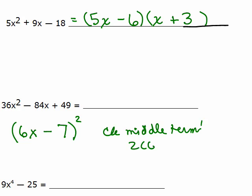Remember, it's 2 times 6x times the negative 7, which is negative 48x, just like it should be, so that's the right answer. If not, if you don't get the right middle term, then you need to try some other method.